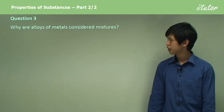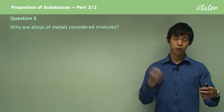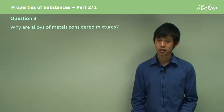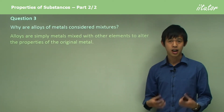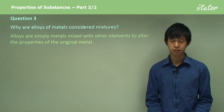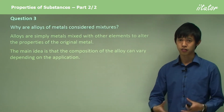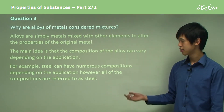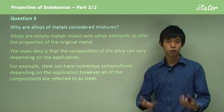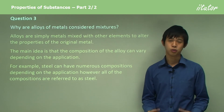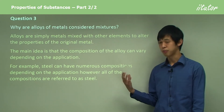Why are alloys of metals considered mixtures? When we alloy metals, we take a molten block of metal and put in other elements to alter it so it becomes more useful. Alloys are simply metals mixed with other elements to alter the properties of the original metal — for example, iron is mixed with carbon to make steel. The key point is that the composition of the alloy can vary depending on the application. Steel can have numerous compositions, and things like stainless steel still carry the name 'steel' but have a different composition.